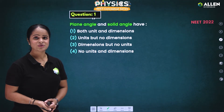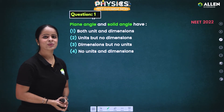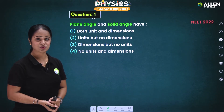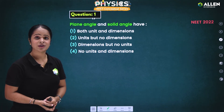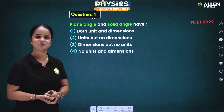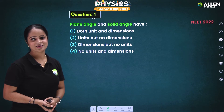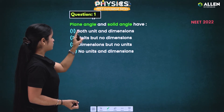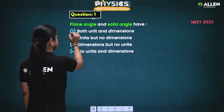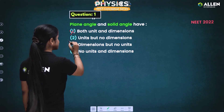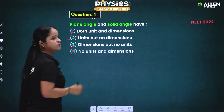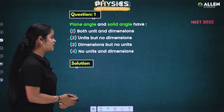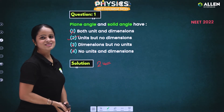Now we are going to solve a direct question from NEET 2022. The question is: plane angle and solid angle have — and there are four options. As discussed, plane angle and solid angle are physical quantities which have SI units but no dimension. So option 1 (both unit and dimension) is wrong. Option 2 (units but no dimensions) is correct. Therefore option 2 is the correct answer.